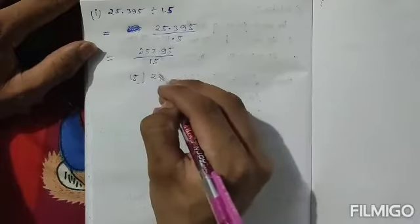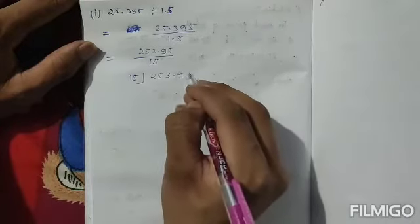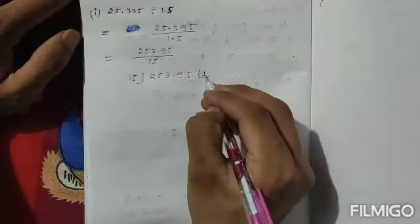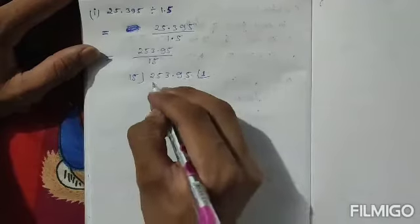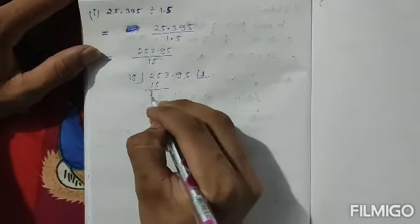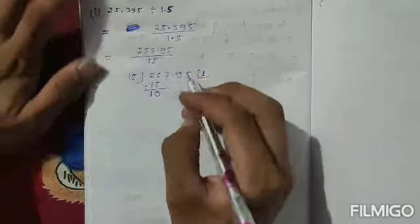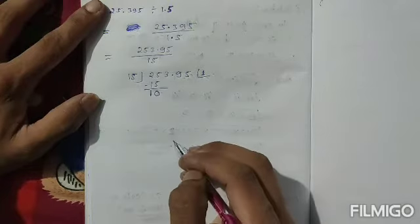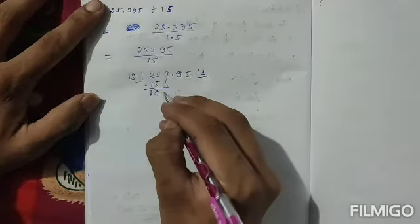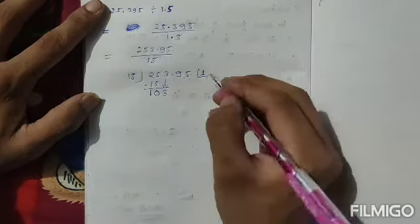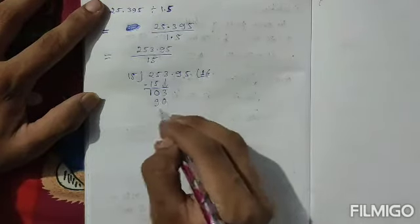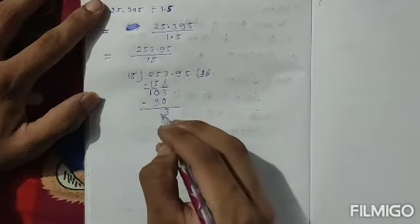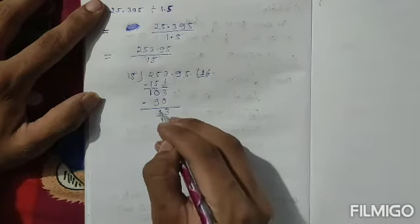Now I have to divide 253.95 by 15. First I divide 25 — it goes one time, so 15, and subtracting: 5 minus 5 is 0, 2 minus 1 is 1. Then 3 comes down, making 13. How many times does 15 go into 13? Six times, giving 90. Then 3 minus 0 is 3, 10 minus 9 is 1, giving remainder 13.